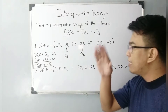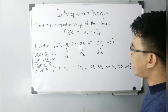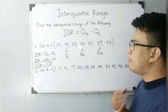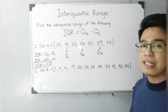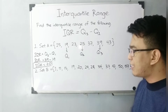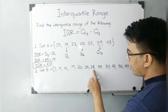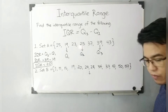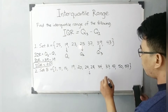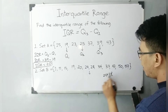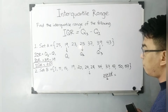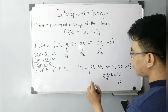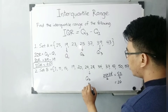So the first thing you need to do again is to find your median or quartile number two. Since we have 12 elements, the median is between the 6th and 7th elements. Your median here is 24 and 28. Simply add 24 plus 28 and then divide it by 2. That gives you 52 divided by 2, which equals 26. Your quartile number two is 26 — that is the median of your given data set.